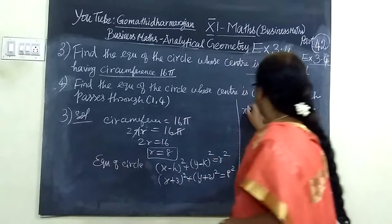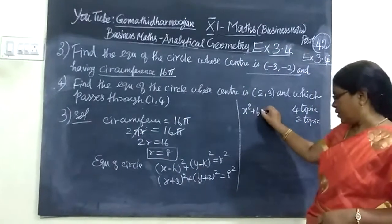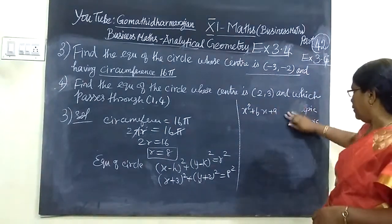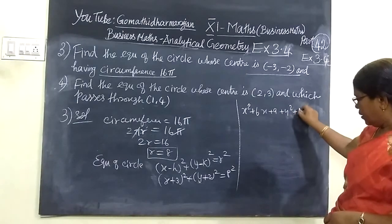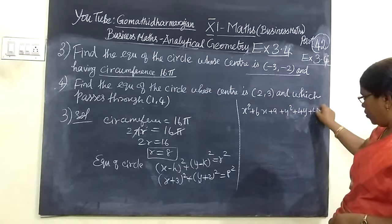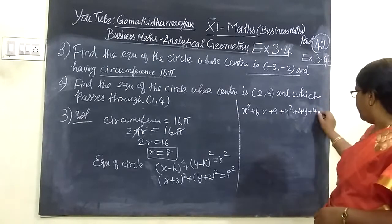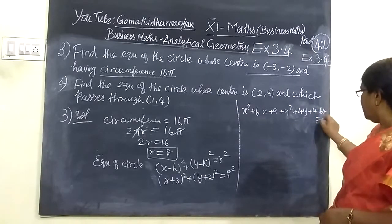You can write x² + 6x + 9, then y² + 4y + 4 equals 64. Bringing 64 to the left side, minus 64 equals 0.